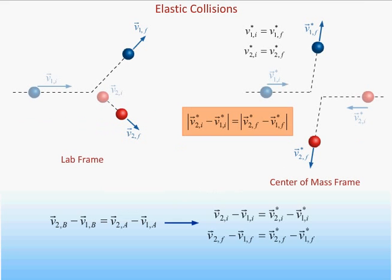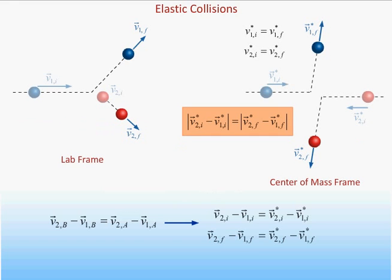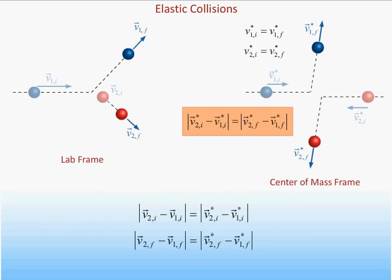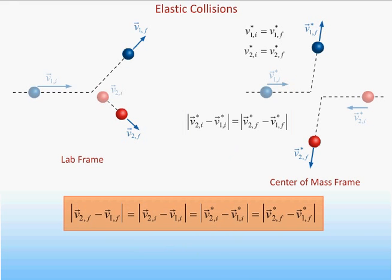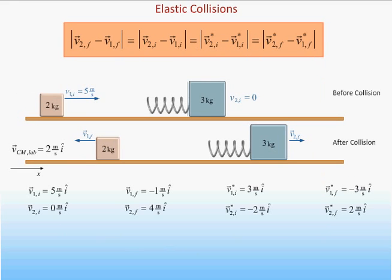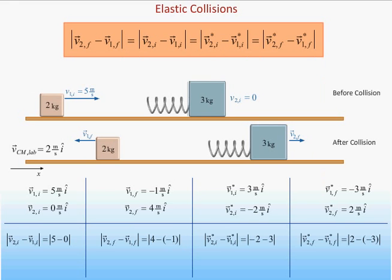If the relative velocity of two objects at a given time is the same in all inertial reference frames, then the relative speed of the two objects must also be the same in all inertial reference frames. Since we have just shown that the relative speed of the two objects in an elastic collision is the same before and after the collision in the center of mass frame, it follows that the relative speed is the same before and after in any inertial reference frame. Indeed, if we look back to the one-dimensional example from last time, we see that the relative speeds of the two objects — the difference in the magnitudes of their velocities — is equal to 5 meters per second, both before and after the collision, in both the center of mass and the lab reference frames.